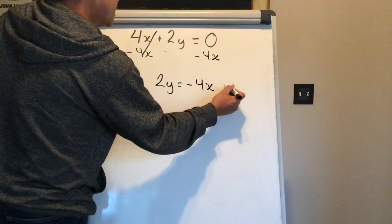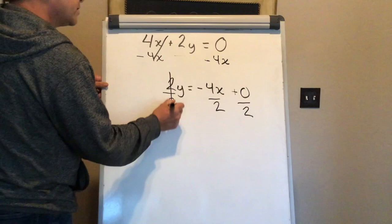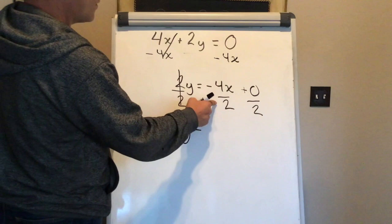Now, to isolate the y, I need to divide each term by 2. 2 divided by 2 is 1. So we have y is equal to negative 4 divided by positive 2 is negative 2, and we have to attach the x.